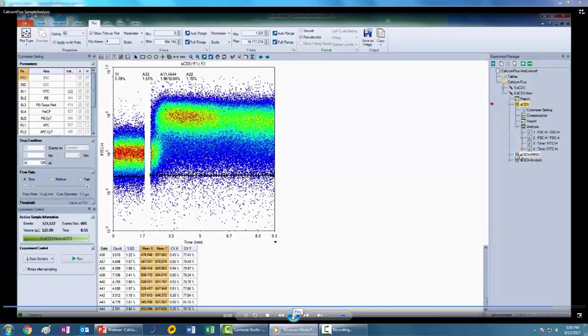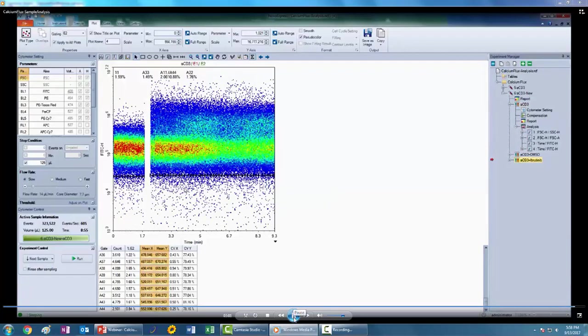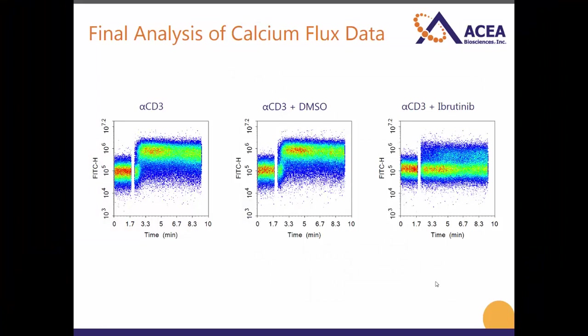This first sample has the calcium flux response of Jurkat T cells to anti-CD3 antibody. As a comparison, in the second sample I have prevented this response with ibrutinib, which is a small molecule inhibitor of IL-2 inducible kinase ITK, which dampens TCR signaling. Here are the final plots that I generated from this experiment which shows the response to anti-CD3 antibody alone as well as the inhibition of this response with ibrutinib. The final plots have small gaps which represent the time that it takes the instrument to load and begin analysis, which is approximately 20 seconds. As you can see, ibrutinib completely obliterates anti-CD3 induced calcium flux in T cells, which is seen by the absence of a response once the CD3 antibody was added.